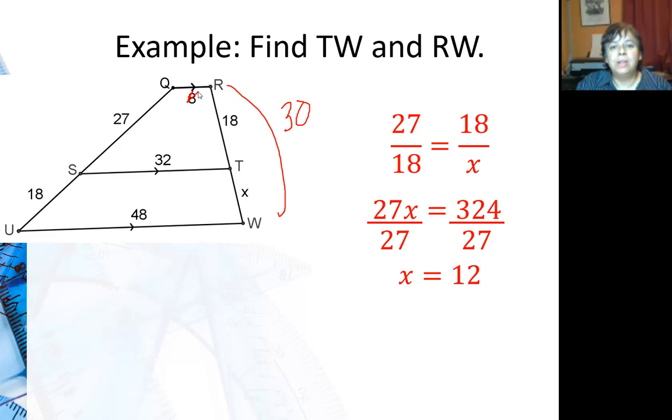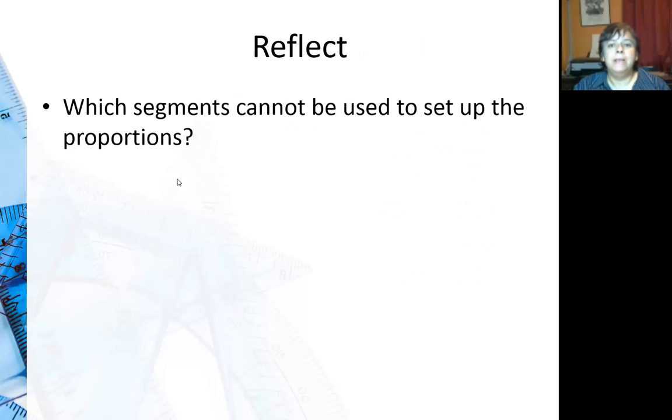For these parallel segments, cross them out. They don't work for part-to-part ratios. The only time you can use those parallel segments is when we're doing whole triangles. I'm really doing part-to-part here, so don't use the inside segments. Which segments cannot be used? The ones that are inside of the triangle and those that are parallel, or inside of the trapezoid in this case.